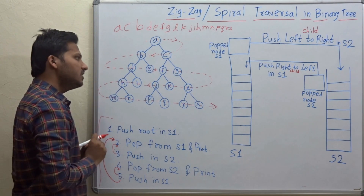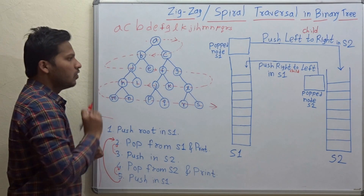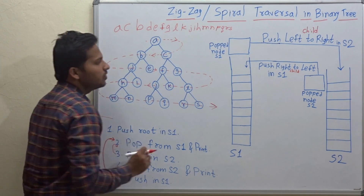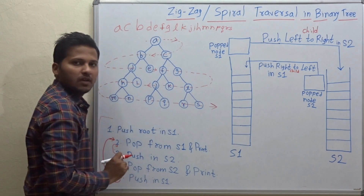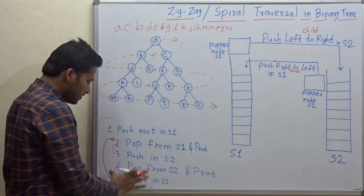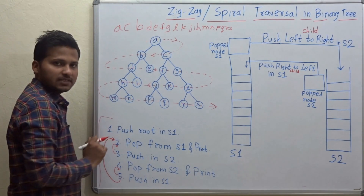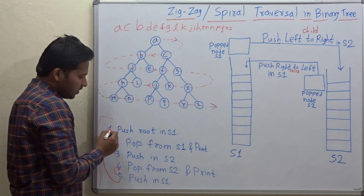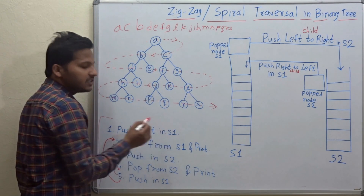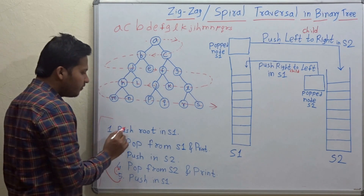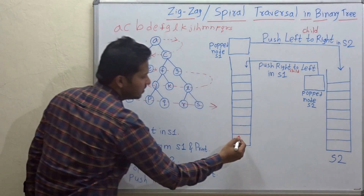Now let's see the algorithm for doing this. For writing the program we are going to use these two stacks, and these are the steps in the algorithm. The first step is push root in S1, so you have to push the root of the tree in stack 1.